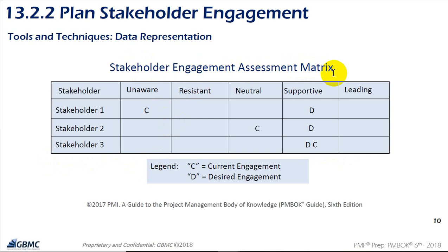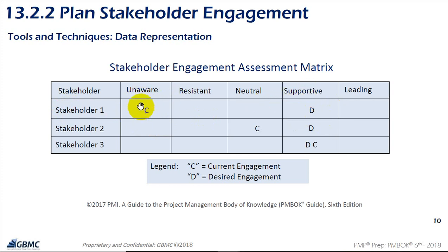The Stakeholder Engagement Assessment Matrix shows the current and desired engagement status of each stakeholder. For example, based on data collection and interviews, a stakeholder may currently be unaware but should move to desired engagement, which is supportive. Another stakeholder may currently be neutral but we want them to become supportive. A third stakeholder is already supportive, and we want them to stay at that level.